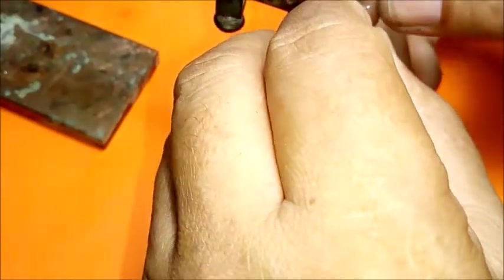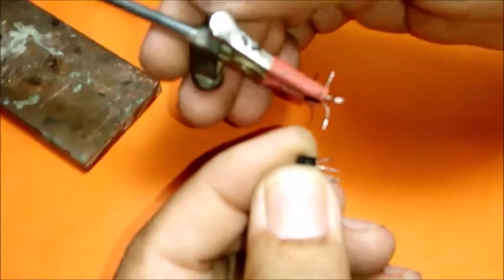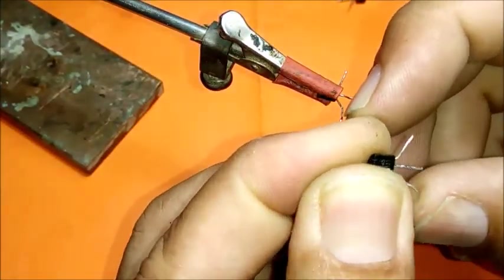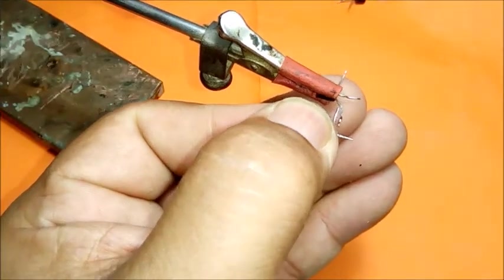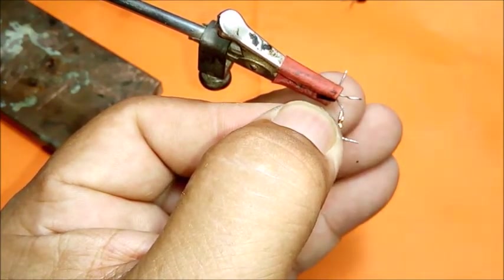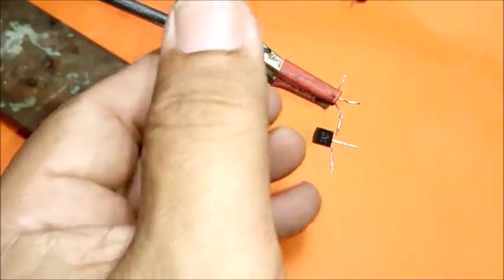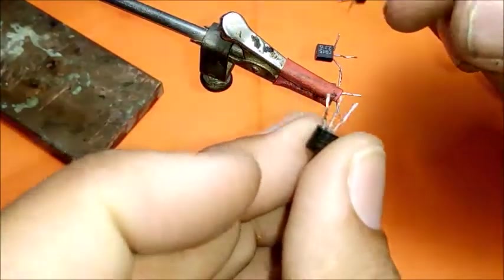We place the first transistor like this. We separate the Emitter pin and the Base pin. Now the second transistor, the same way. We connect the Emitter and Base pins together. Now let's do the other transistor, the same way.